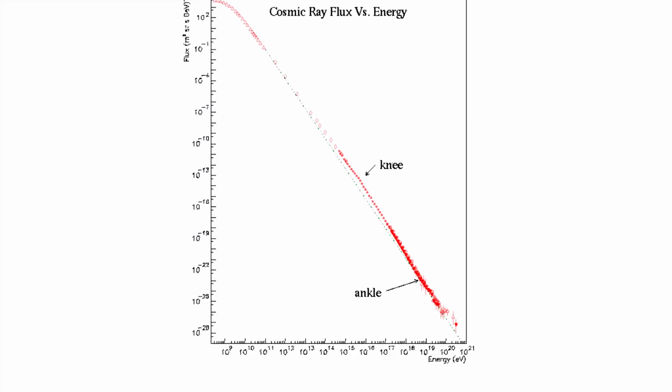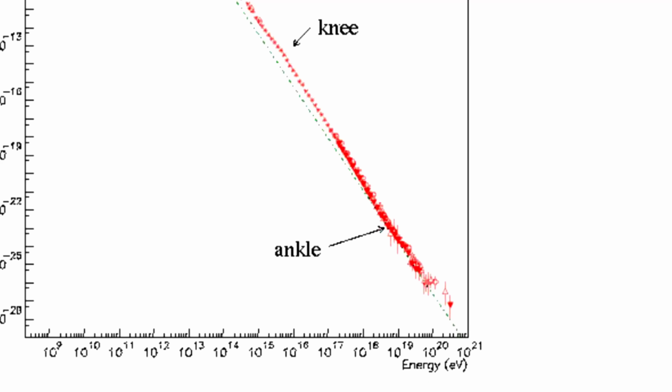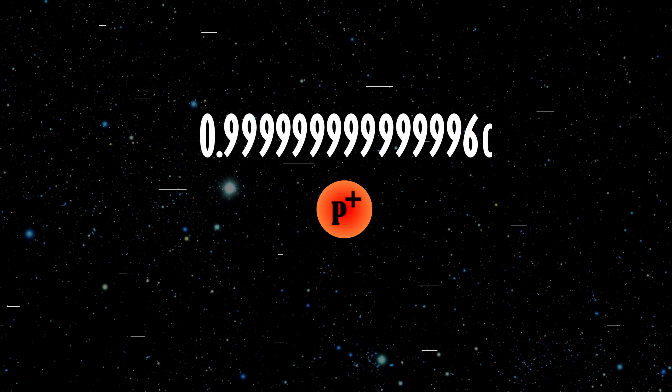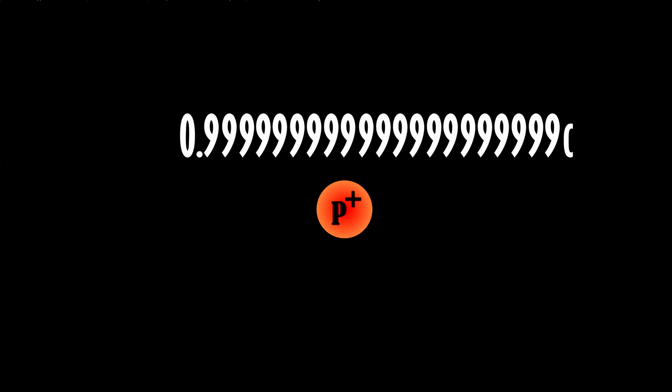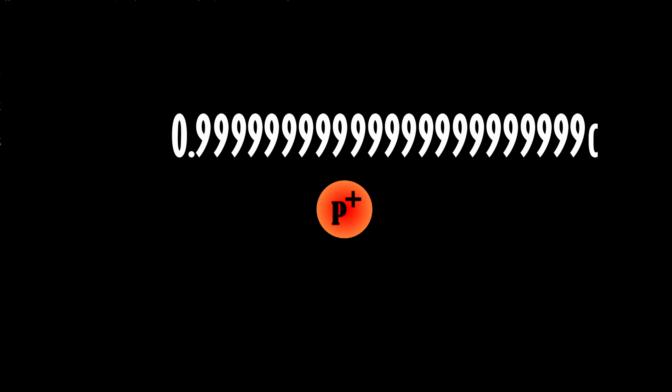You could extrapolate this analysis further and calculate the probability of finding particles of higher and higher energy. But the problem is that there is a limit to this rule: after the energy of 6.2 times 10 to the 19 electron volts we barely detect anything. So what exactly happens at this particular energy? If the universe were empty there would be no limit to the speed of a proton and it could get arbitrarily close to the speed of light.